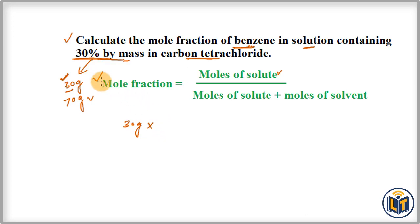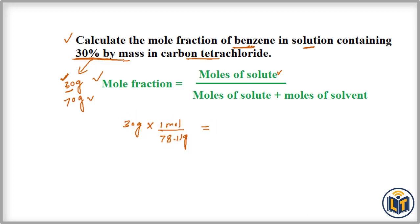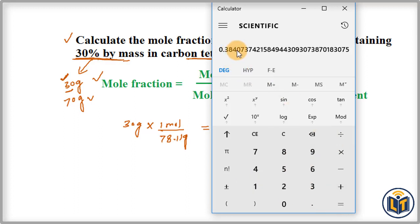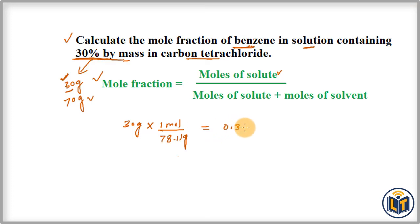We can find this value using the periodic table of elements. One mole of benzene has 78.11 grams. We divide 30 by 78.11 and the value we get is 0.384. So the moles of benzene is 0.384 moles.